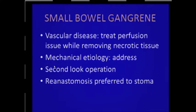Say you have a bad situation with small bowel gangrene and an obese patient in the OR. If it's a vascular etiology — and severely obese patients do have significant vascular disease — you have to treat the perfusion issue just as you would for any bowel ischemia, addressing vascular reconstruction, catheter placement, perfusion, arteriography, and getting that fixed.